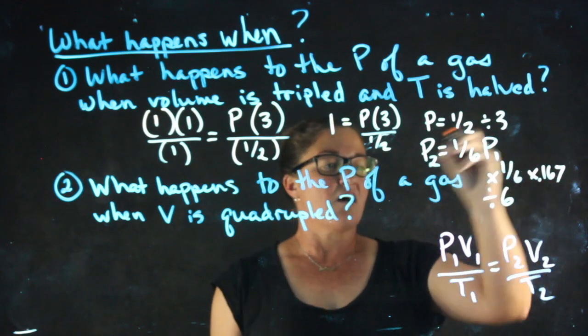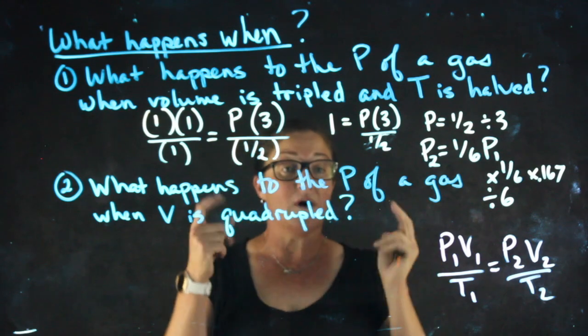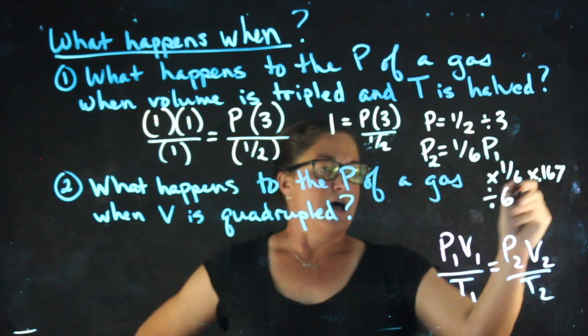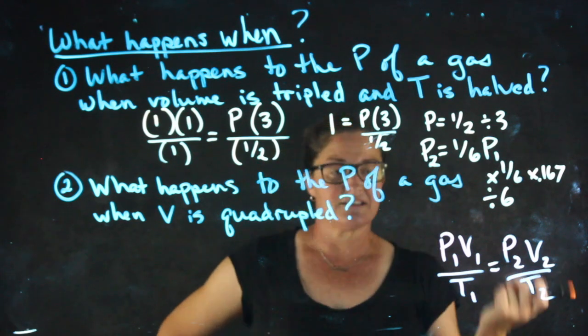Any of these are acceptable ways of expressing your answer, but you may not put just one sixth as your answer, or 0.167 as your answer. You need to indicate how P2 relates to P1.